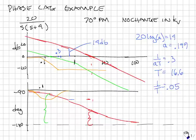I can write down the controller right now. It is 1 plus 1 over 0.3s. I have a zero at 0.3. And 1 over 1.05s. I have a pole at 0.05.